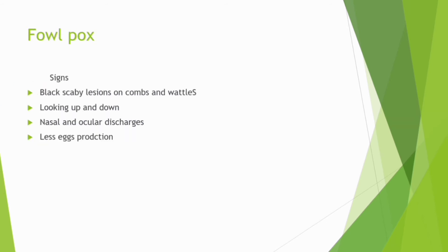The second disease is fowlpox. Fowlpox is also a viral disease. You find your chickens are having scurvy regions on combs or wattles, and when it becomes chronic, you find those lesions also on the legs. You find your chickens are looking up and down. There is ocular discharge, and of course reduced egg production.